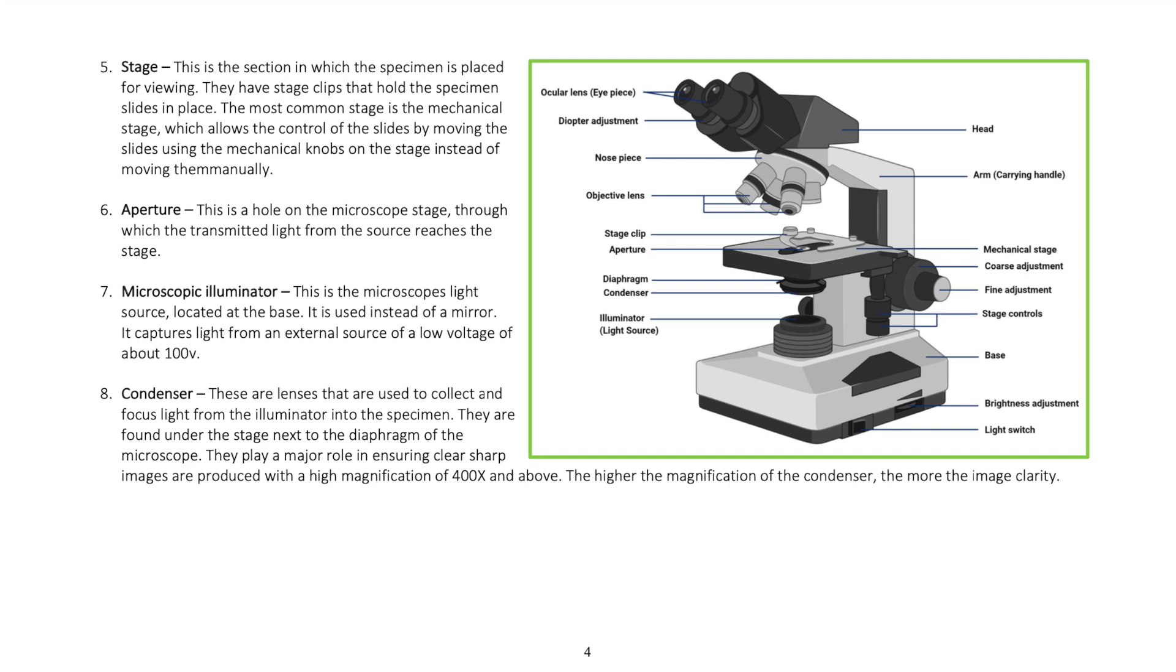The stage is the section in which the specimen is placed for viewing. They have stage clips that hold the specimen slides in place. The most common stage is the mechanical stage, which allows control of the slides by moving them using the mechanical knobs on the stage instead of moving them manually.